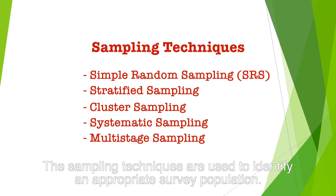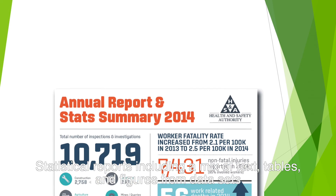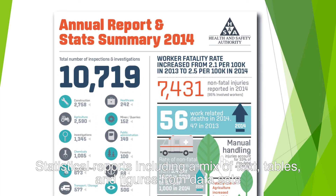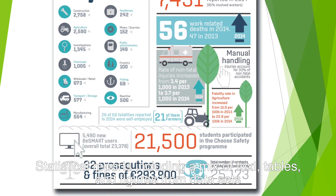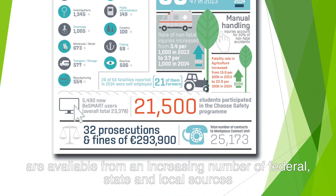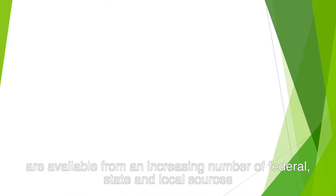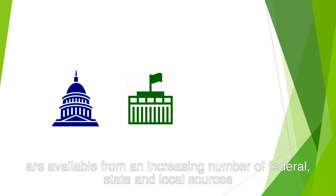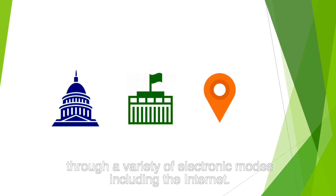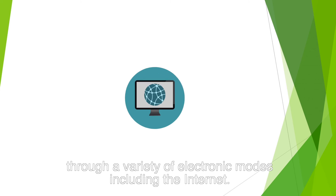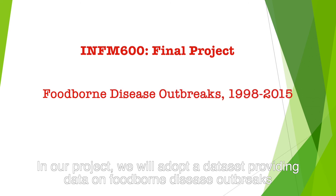Examples include many of the federal surveys of health status, health behaviors, and health services utilization. Sampling techniques are used to identify an appropriate survey population. Statistical reports include a mix of text, tables, and figures from datasets available from an increasing number of federal, state, and local sources through a variety of electronic modes, including the internet.